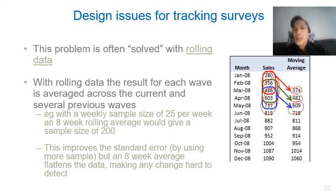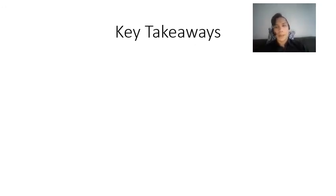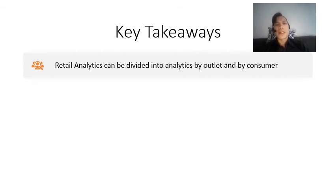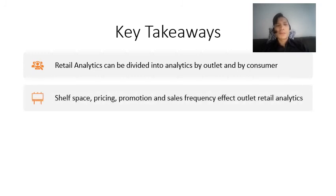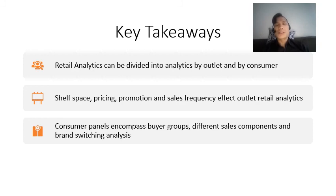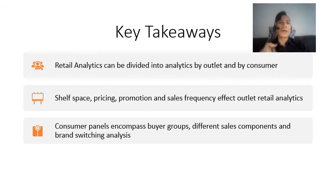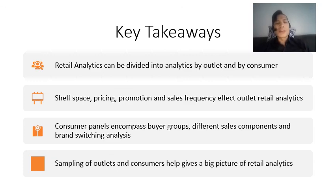The key takeaways of this lecture: retail analytics can be divided into analytics by outlet and by consumers. Shelf space, pricing, promotion, and sales frequency affect retail outlet analytics. Consumer panels are a great way to understand what buyer groups want, examining different sales components and brand switching analysis — by looking at width (percentage of buyers), depth (volume per buyer), and further breaking down volume per buyer by purchase occasion and volume per occasion. Sampling of outlets and consumers can give you a big picture of retail analytics when you have no resources to sample a large number of your retail tracking.